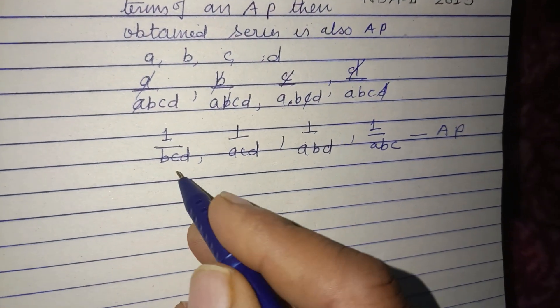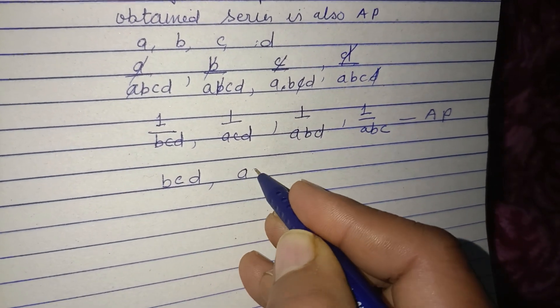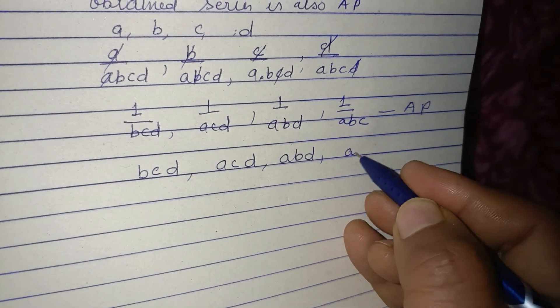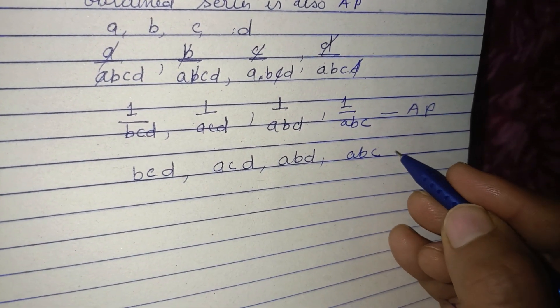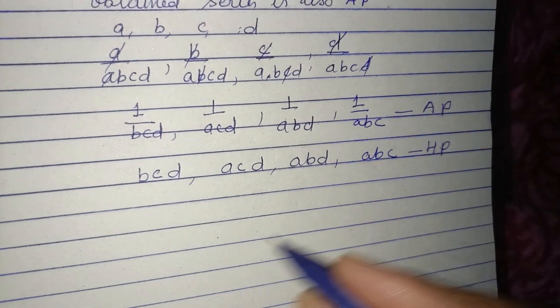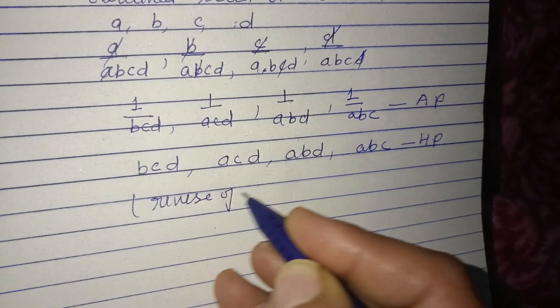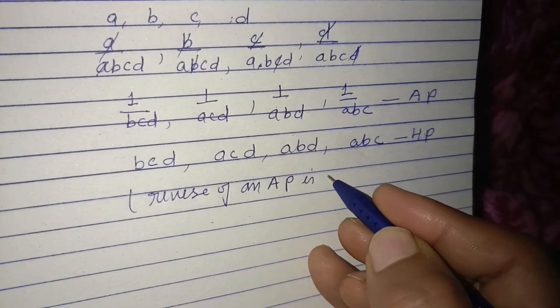If we reverse these terms: 1/ABC, 1/ABD, 1/ACD, 1/BCD. And reverse of an AP is HP, harmonic progression.